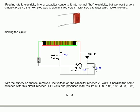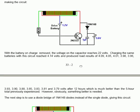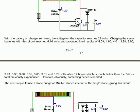Charging the same batteries with this circuit reached 4.14 volts and produced load results of 4.09, 4.05, 4.01, 3.98, 3.96, 3.93, 3.90, 3.88, 3.85, 3.83, 3.81 and 3.79 volts after 12 hours, which is much better than the 5 hour total previously experienced. However, obviously, something better is needed.